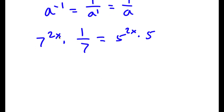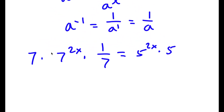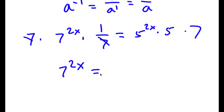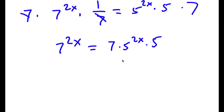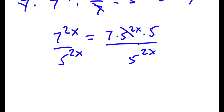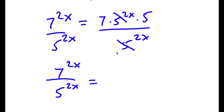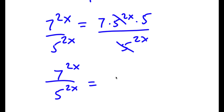So now, if I multiply both sides by 7, the 7 and the 1 over 7 cancel out because they are reciprocals — multiplying two reciprocals equals 1. So I get 7 to the power of 2x equals 7 times 5 to the power of 2x times 5. Then I divide both sides by 5 to the power of 2x, and those two cancel out. I'm left with 7^(2x) over 5^(2x) equals 7 times 5.